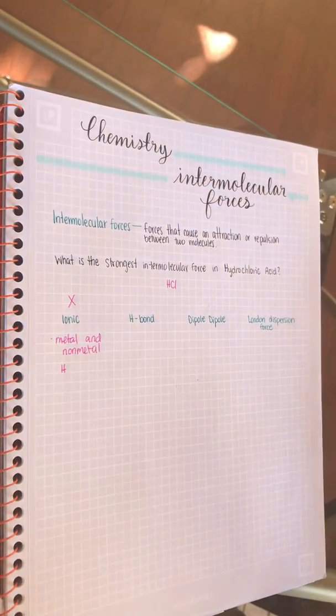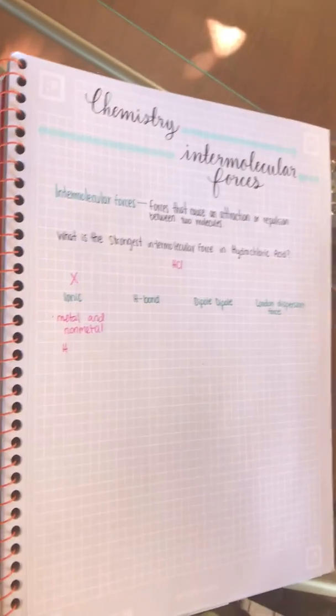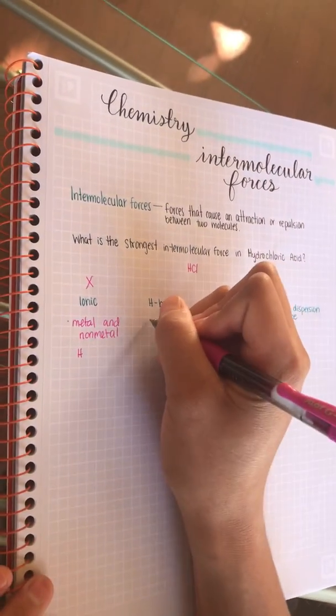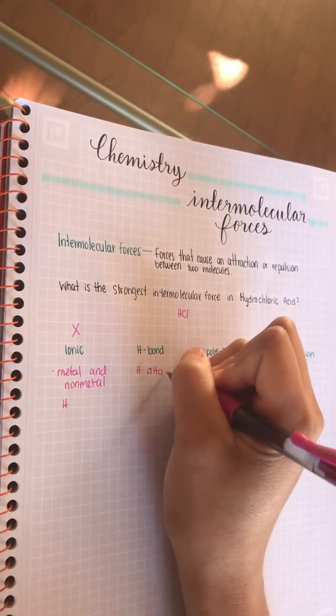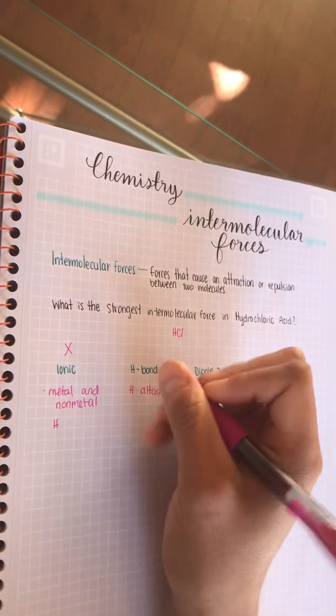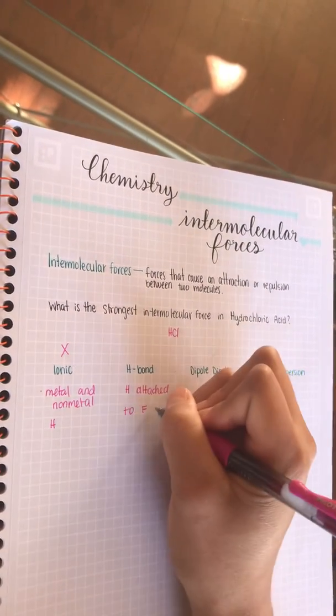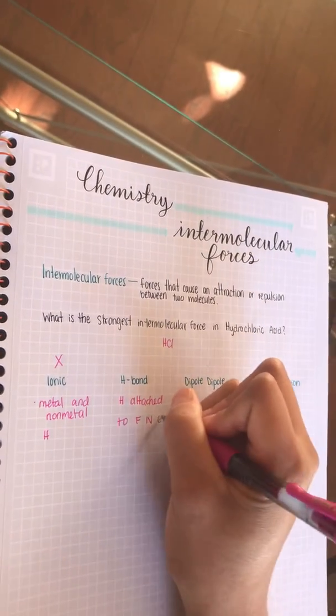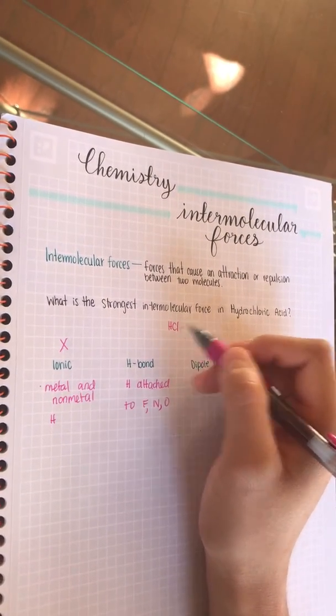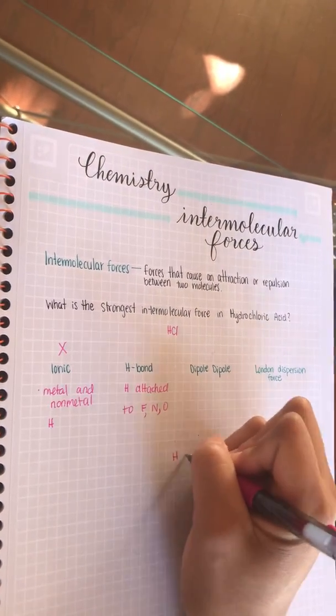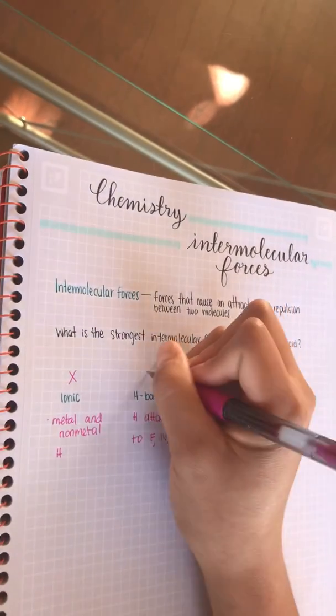To have a hydrogen bond, we need to have hydrogen attached to fluorine, nitrogen, or oxygen. This one does not have a bond with any fluorine or nitrogen or oxygen, so this one is out.